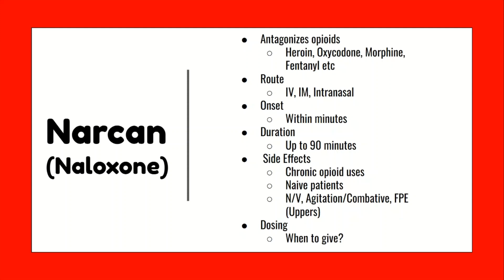So Narcan, otherwise known as Naloxone, antagonizes opioids. This is important because opioids can cause respiratory depression and a decreased level of consciousness that, when severe, can lead to the patient overdosing and dying.